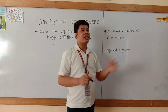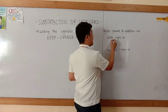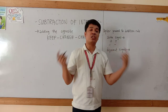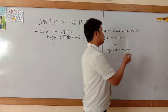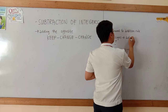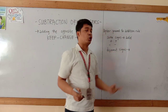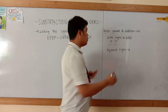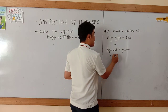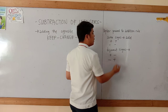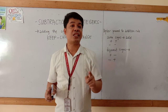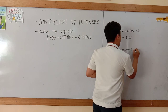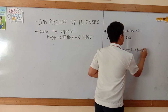So we have here same signs — positive-positive, or negative-negative — the operation that we'll use is addition, so we need to add the integers. And if the integers have different signs, like positive-negative or negative-positive, the operation you will use is subtraction, so you are going to subtract or minus.